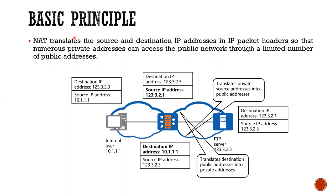NAT translates the source and destination IP address in a packet header so that numerous private addresses can access the public network through a limited number of public addresses. Every NAT device maintains an address translation table. The NAT mechanism involves the following process: translate the IP addresses and port numbers of internal hosts into the external addresses and port numbers of the NAT device, and vice versa. NAT implements translation between private address plus port number and public address plus port number.